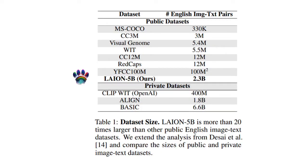If you look at this table, you can see that LAION-5B is much bigger than what had been previously available, and it is in the order of magnitude of what large companies like OpenAI, Google, and Microsoft have internally.